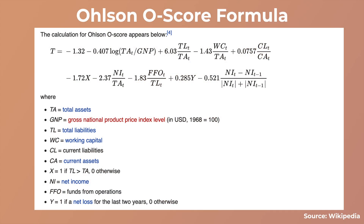The Olsen O-Score came to be around about 40 years ago — 1980 — when James Olsen, the score's namesake, developed it as an alternative to the Altman Z-Score. Both scores use different things to try and predict the solvency of businesses. If you pull up the formula for the Olsen O-Score, it's not a pleasant one at all. It requires things like total assets, total liabilities, working capital, current liabilities, current assets, and a whole lot of other information.